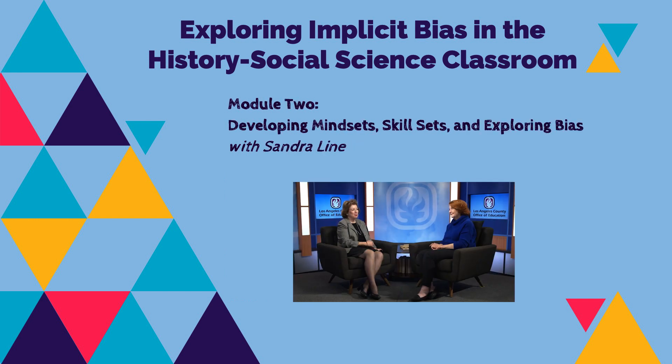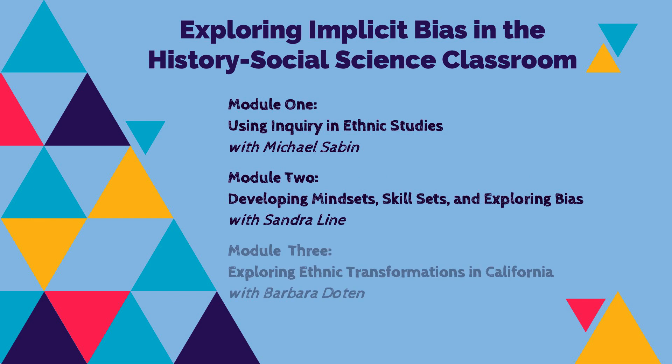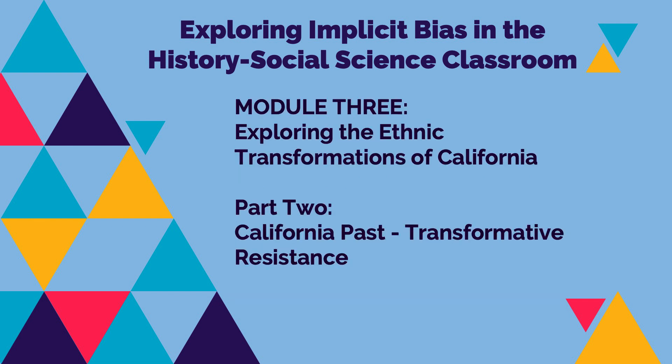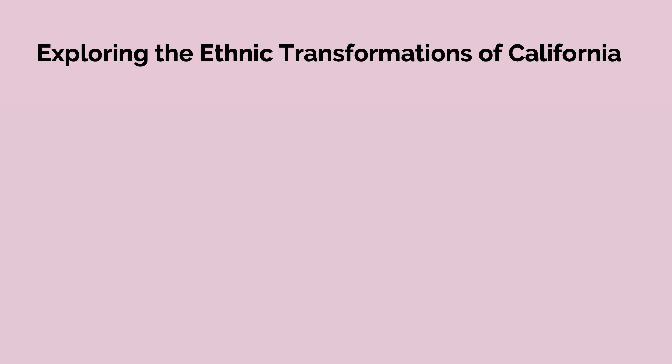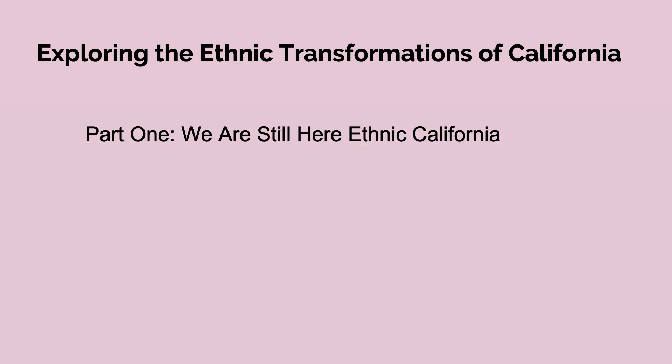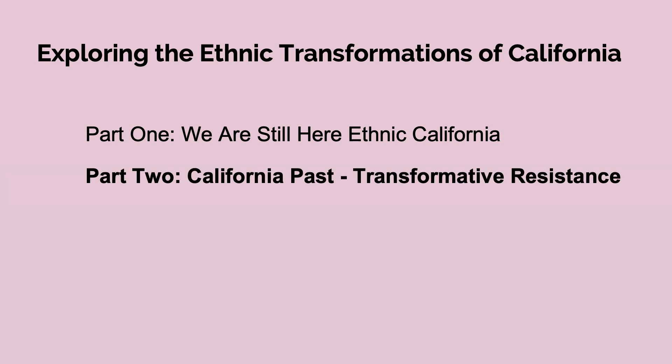In Module 2 with Sandra Line, we talked about developing mindsets and skill sets to move forward. We're now in Part 2 of Module 3. Part 1 was laying the overview and framework on ethnic California — who we are as a state, how we're changing with demographics. This Part 2 is going to focus on California past transformative resistance, a term from the Ethnic Studies Model Curriculum.